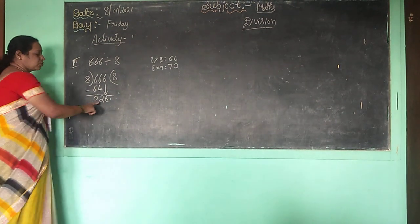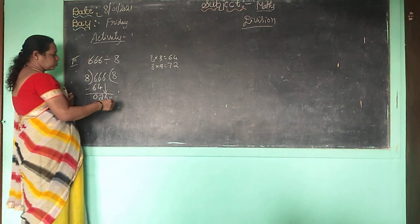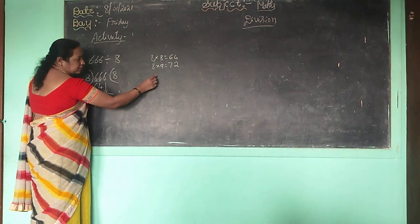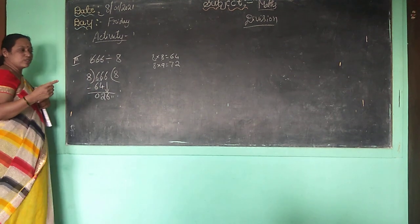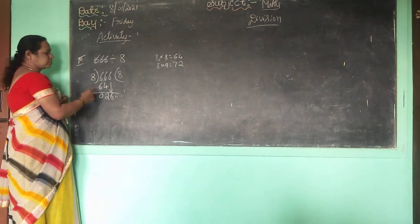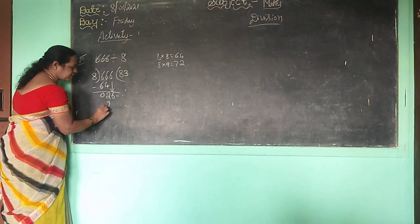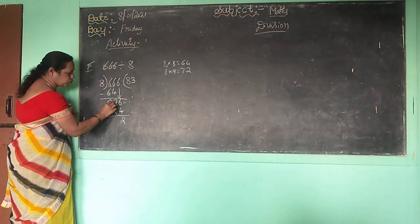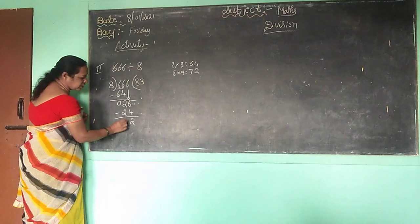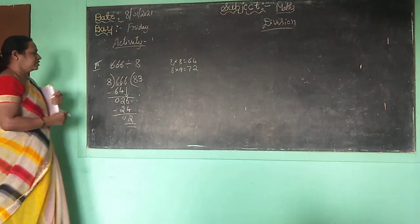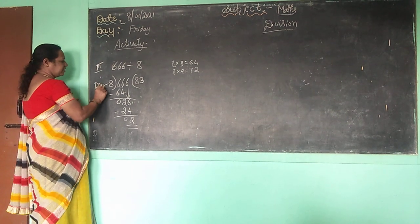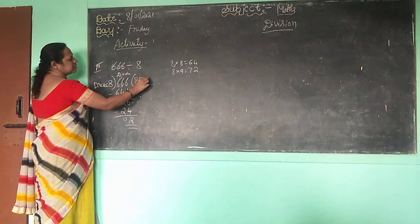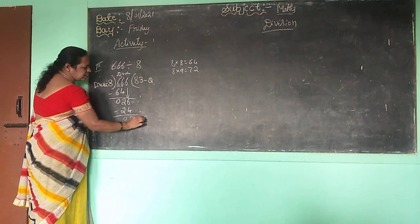We have 26. From the 8 times table: 8 threes are 24, 8 fours are 32. We want 26, so take 8 threes are 24. Minus: 6 minus 4 is 2, 2 minus 2 is 0. This is the divisor, this is the dividend, this is the quotient, and this is the remainder.